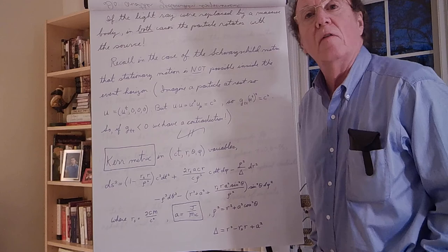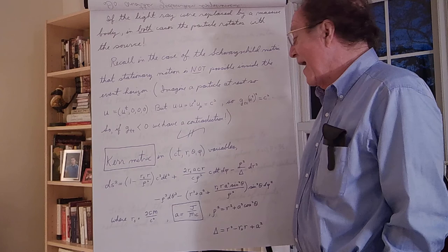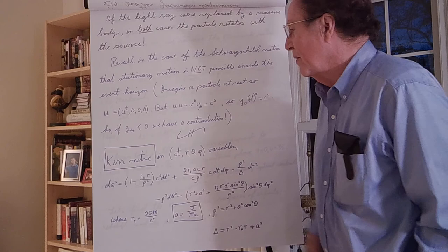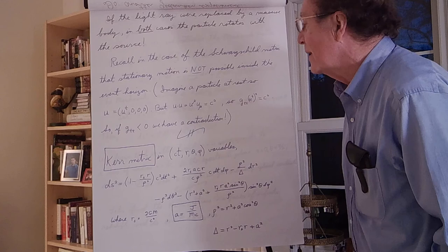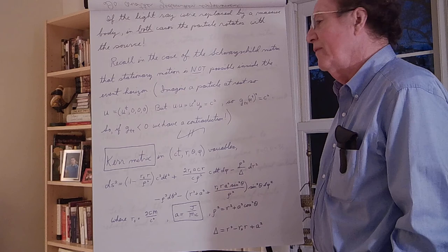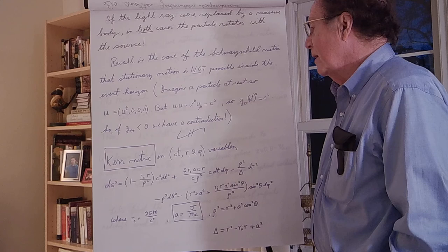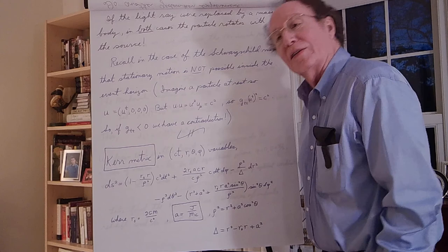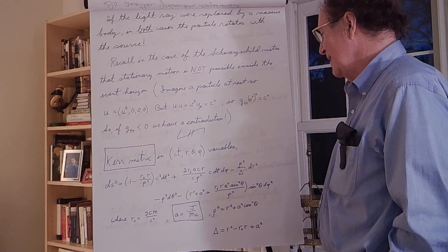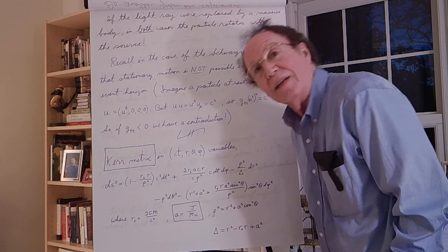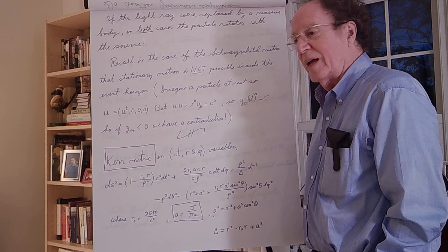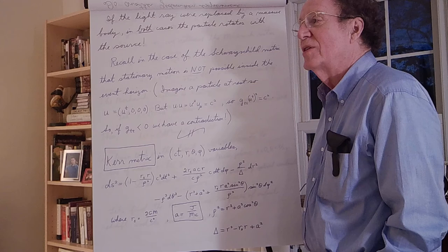We've made introductory remarks about the environment around a rotating star and found some very interesting examples of frame dragging. Now let's turn to the main event: the exact solution — the Kerr metric — the exact metric outside of a rotating star. The star has a given mass and a given angular momentum, which are constant. We can find the exact metric — it's quite a task to do so — but Roy Kerr did it in the 1960s. Like many examples where you get an exact solution, there's a tremendous amount of progress in the field because of that. The Kerr metric has led to an enormous amount of better understanding of black holes.